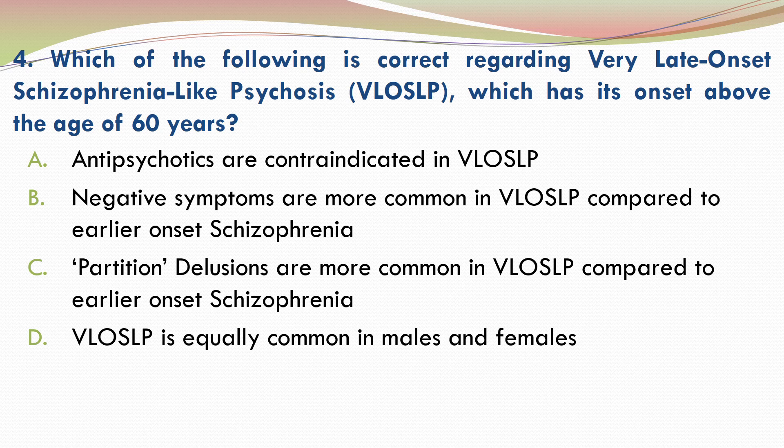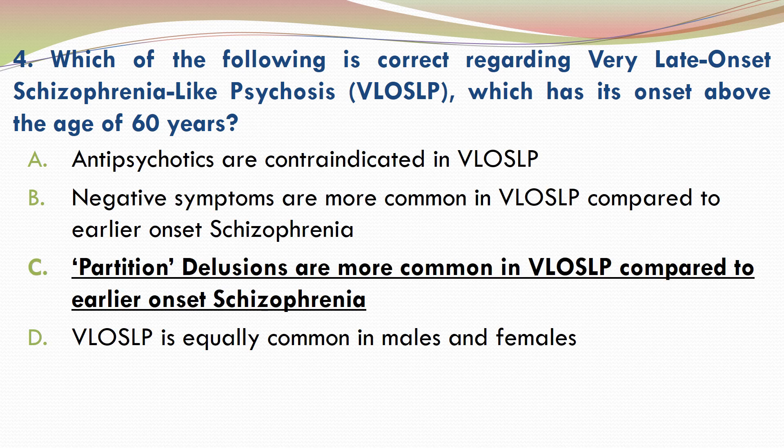The correct answer is C. Partition delusions are more common in VLOSLP compared to earlier onset schizophrenia.